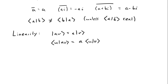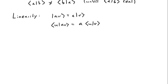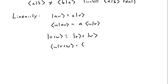And then if we have a vector that's the sum of two other vectors — so let's say v plus w is the sum of the vectors v and w — then the inner product of u and v plus w is the same thing as the inner product of u and v plus the inner product of u and w.